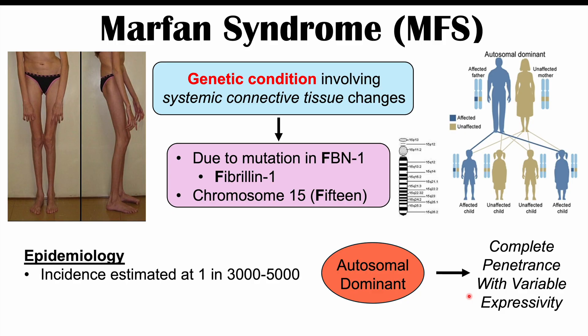Marfan syndrome is relatively a common genetic condition, with incidence estimated at 1 in 3,000 to 5,000. Although an affected child may have an affected parent in about 75% of cases, 25% of cases are due to de novo mutations — brand new mutations in that particular generation — so the child is born with a mutation in FBN1 that their parent didn't have.